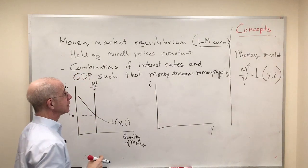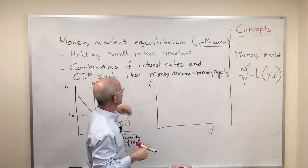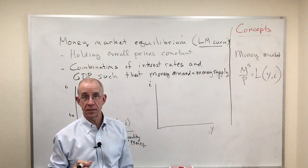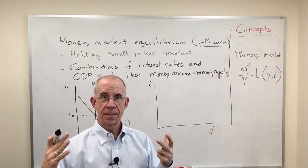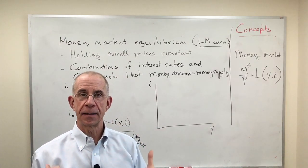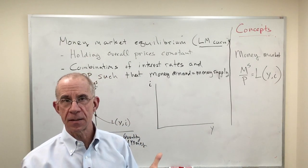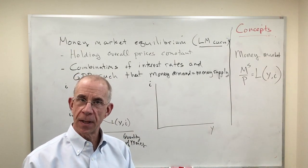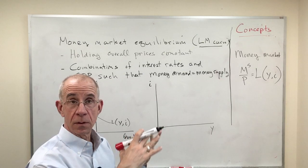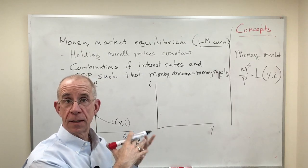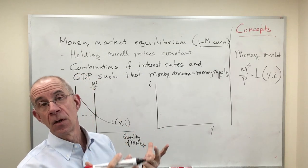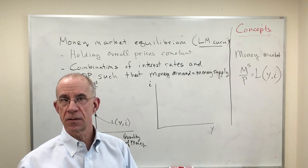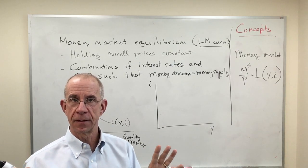Now I'm going to be doing this holding the overall prices constant. It's sort of an old line Keynesian model. That's not because prices are always the same, it's just a place to start. You can adjust this model, the LM and the IS curve, for changes in prices, but we're just holding off on that right now.